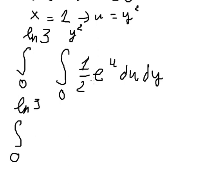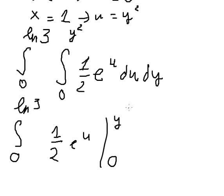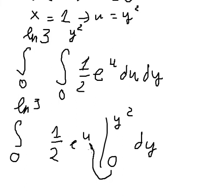So the integral of e to the power of u — the integral of e to the power of u will have e to the power of u, and we put the bounds from 0 to y squared. And we have dy in here, so we put y squared here and number 0 here.